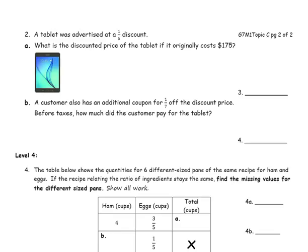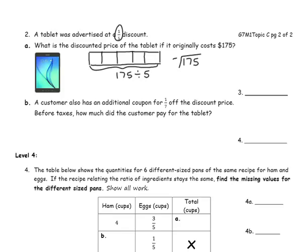Number 2: a tablet is advertised at a one fifth discount. What is the discounted price of a tablet that is originally $175? Let's make a bar representing the original price of $175. For a one fifth discount, we need to separate this into 5 sections using 4 lines — divide it by 5. 175 divided by 5, and the answer is 35. So we'll put 35 in each of these sections, and each one of those 35 represents one fifth.